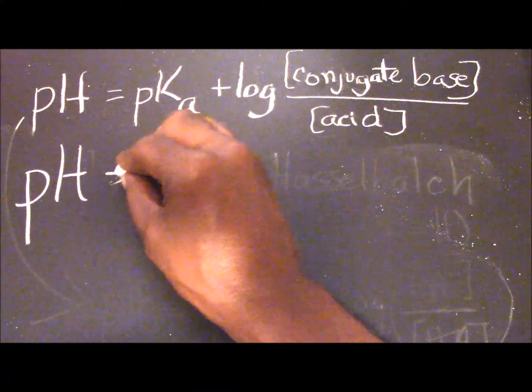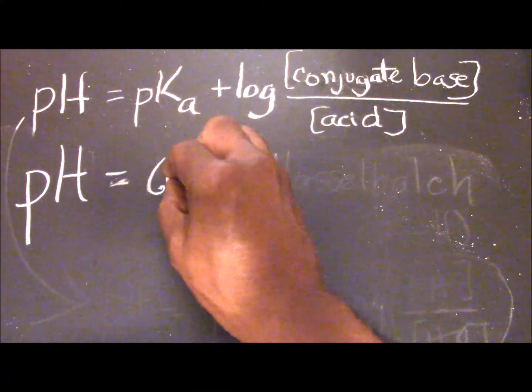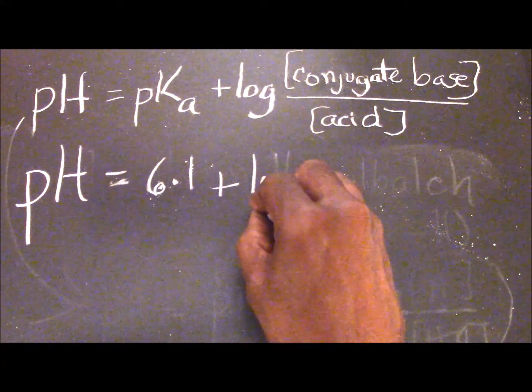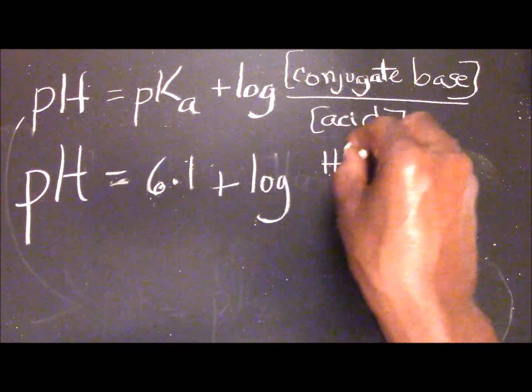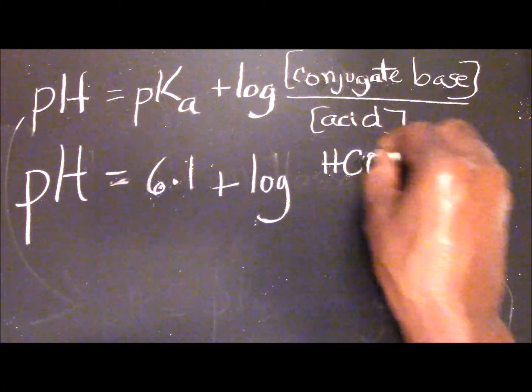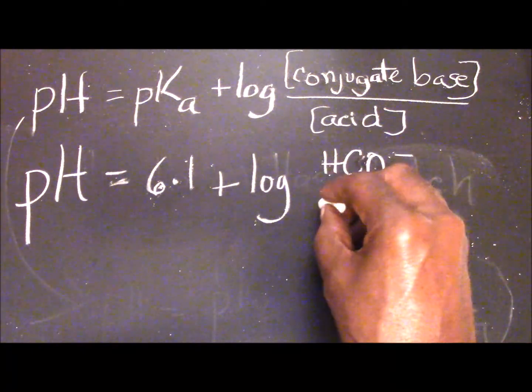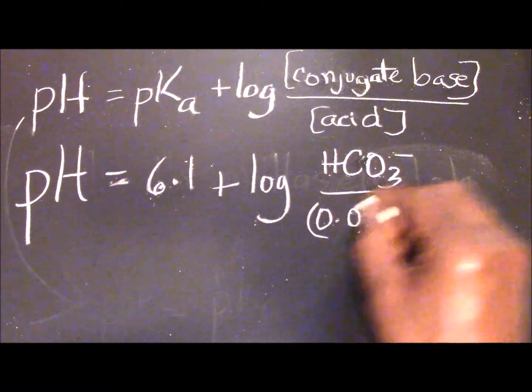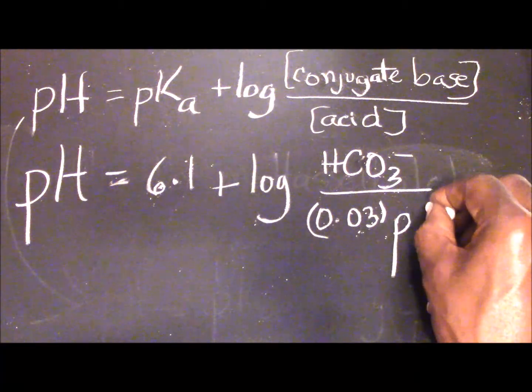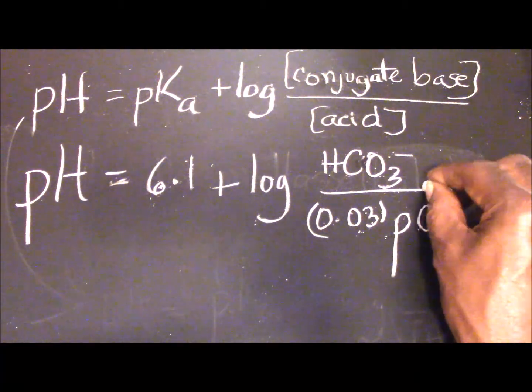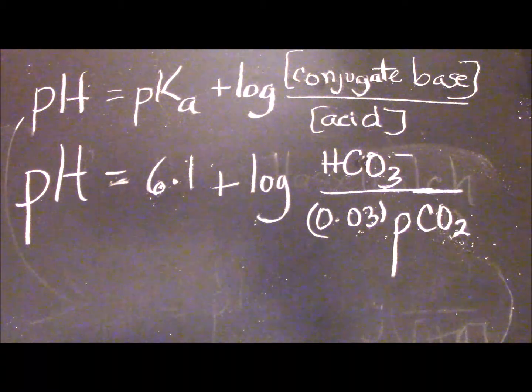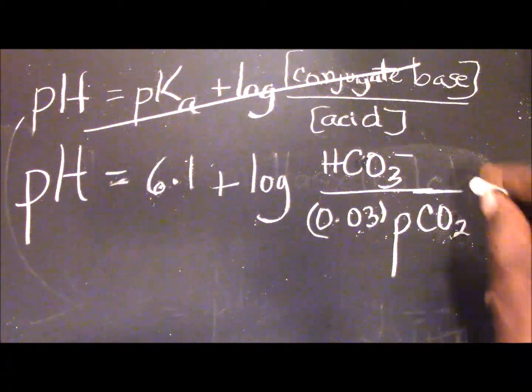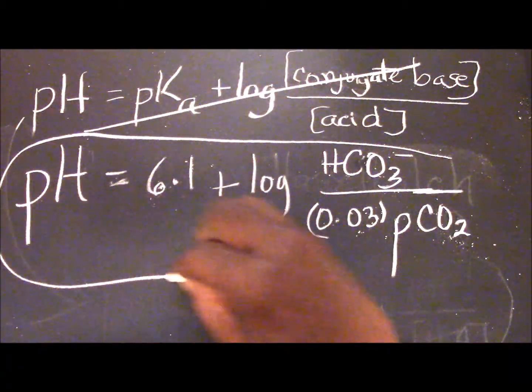That the pH is given by 6.1 plus the logarithm of the bicarbonate ion and 0.03 multiplied by the partial pressure of carbon dioxide. Which makes this irrelevant for this discussion. This is therefore what you need to know.